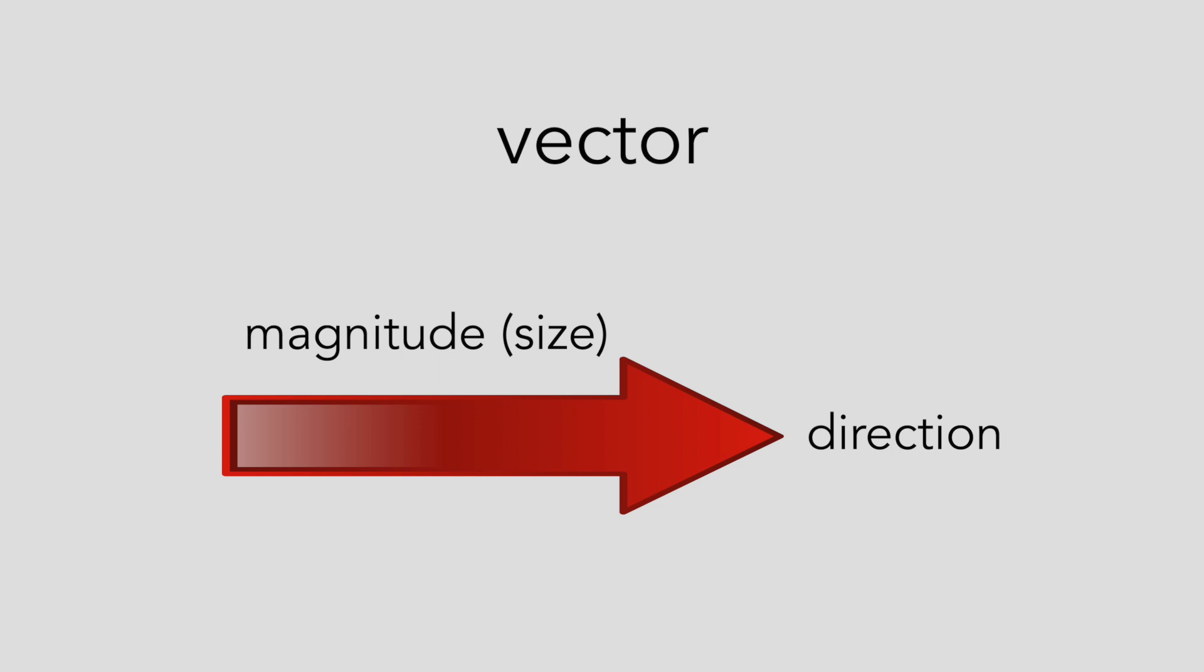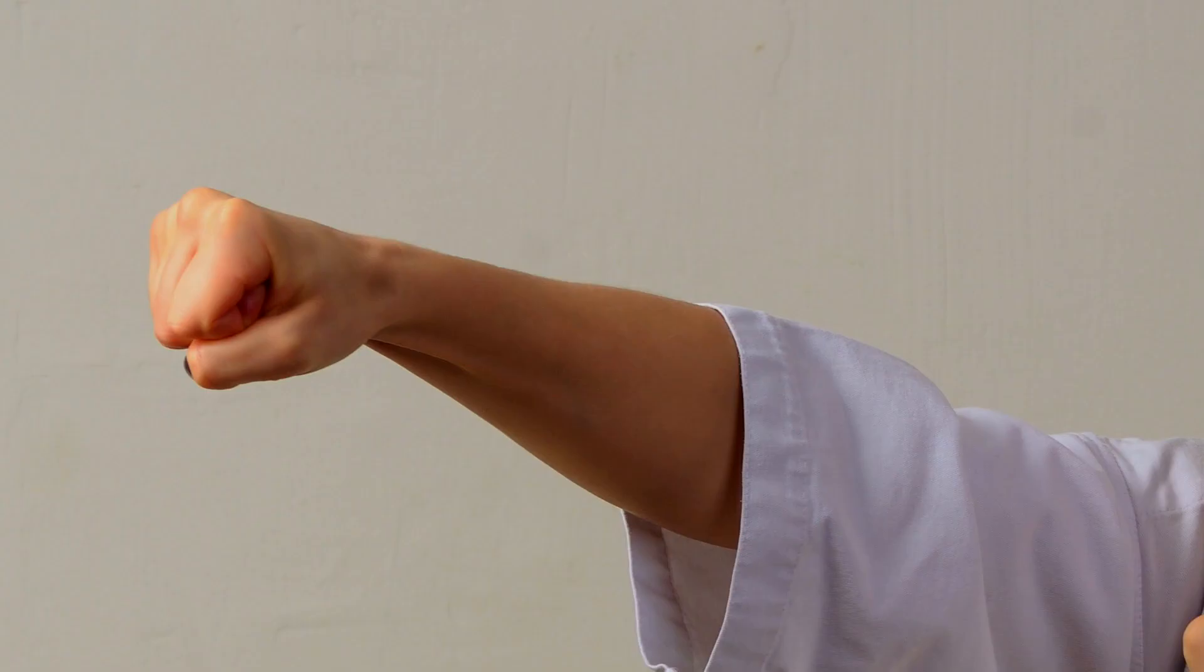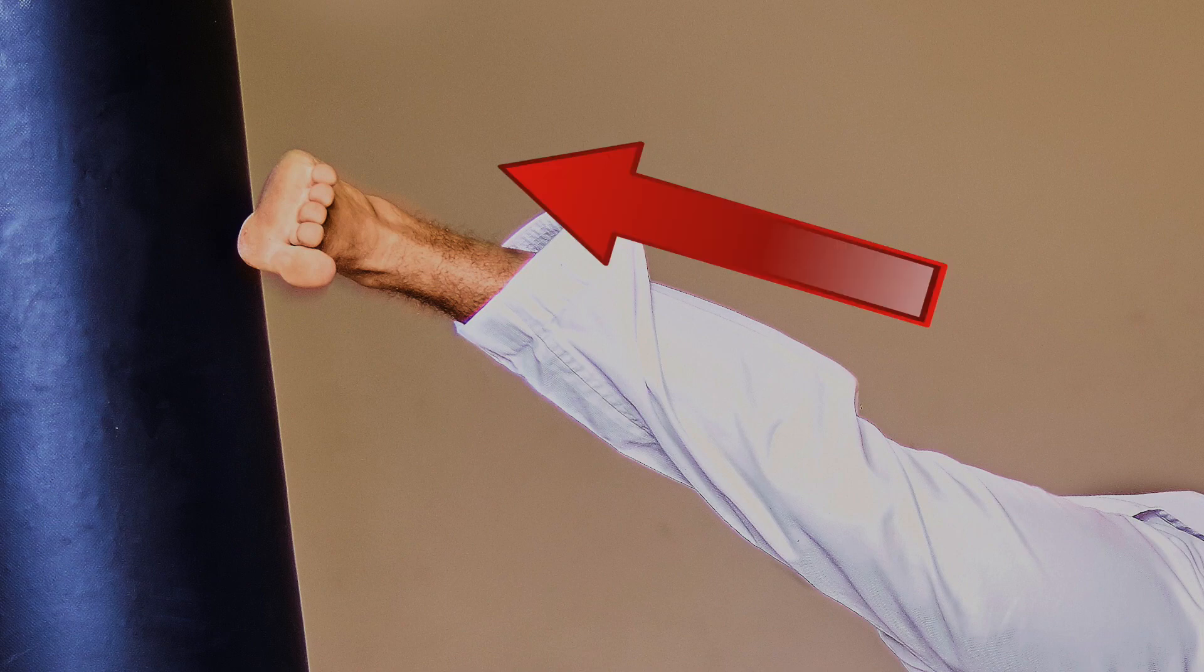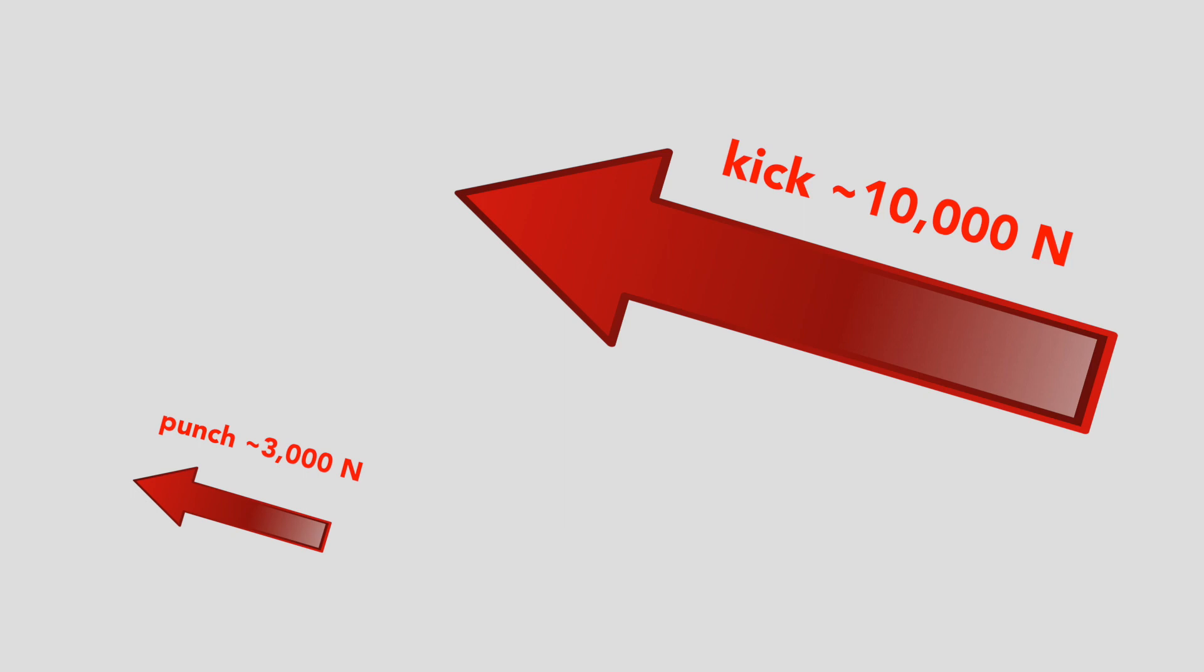For example, a well-placed punch can deliver more than 3,000 newtons of force to a target. A well-placed kick can deliver almost 10,000, the equivalent of one ton of weight. These two forces can be compared visually using the vectors on screen.